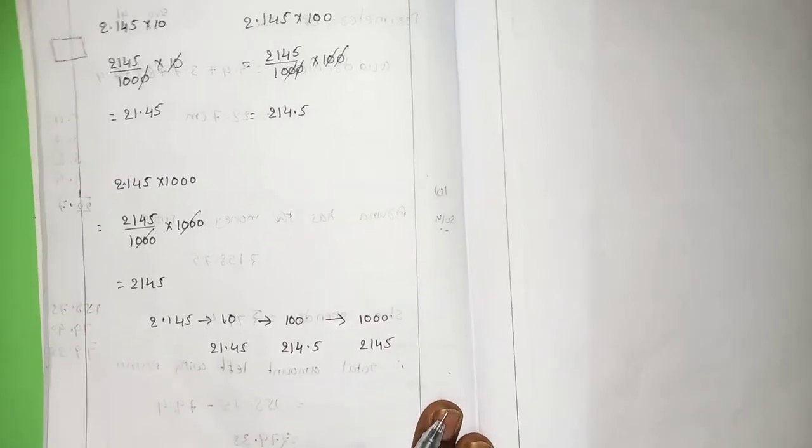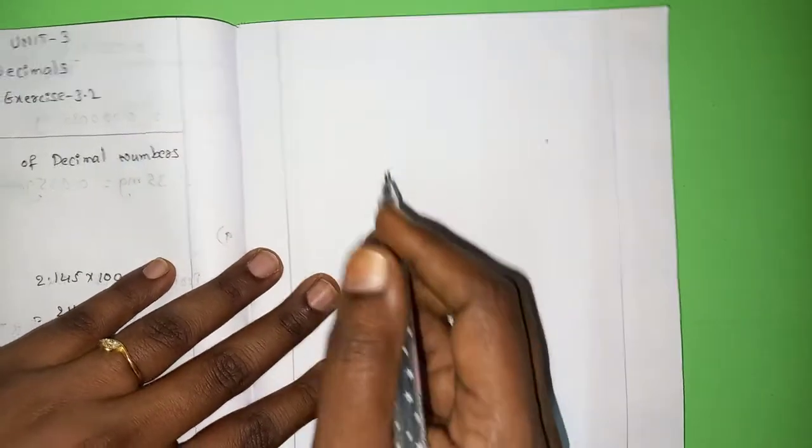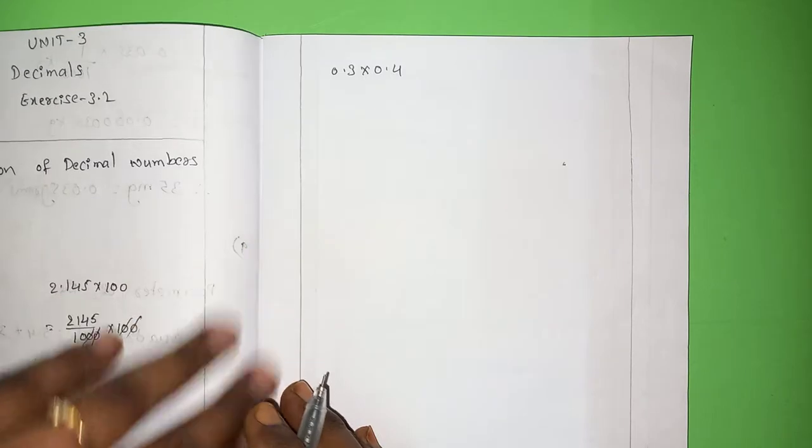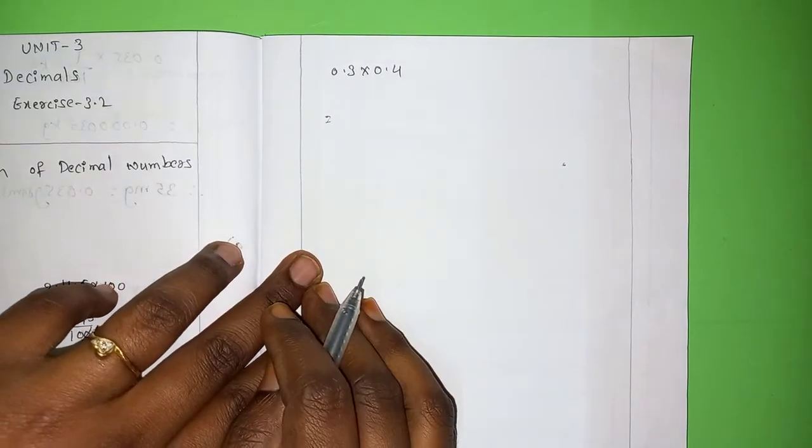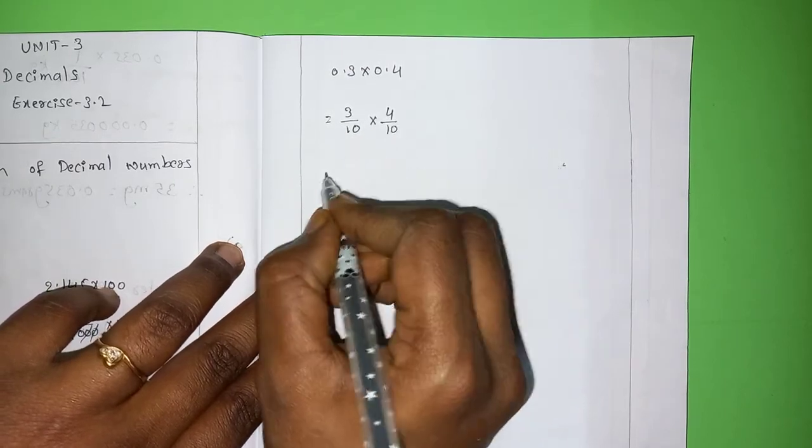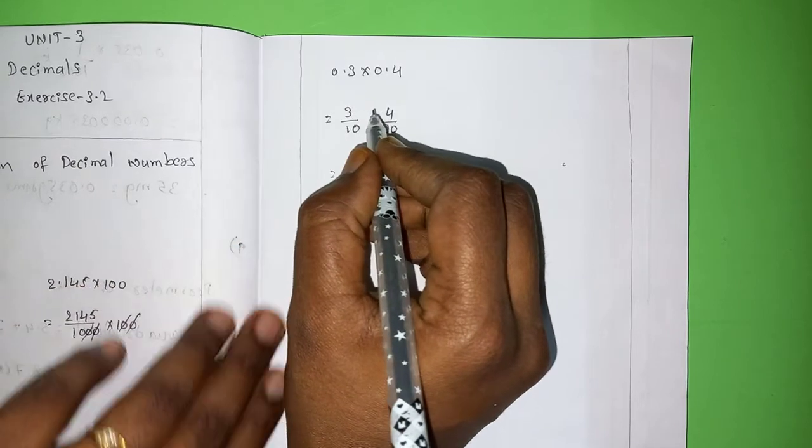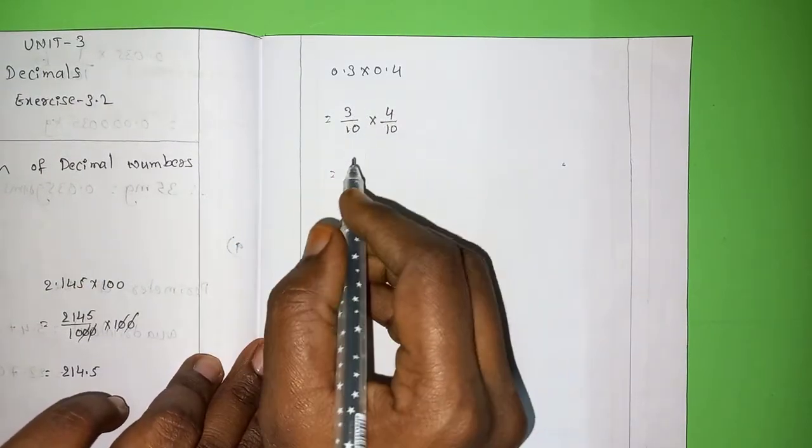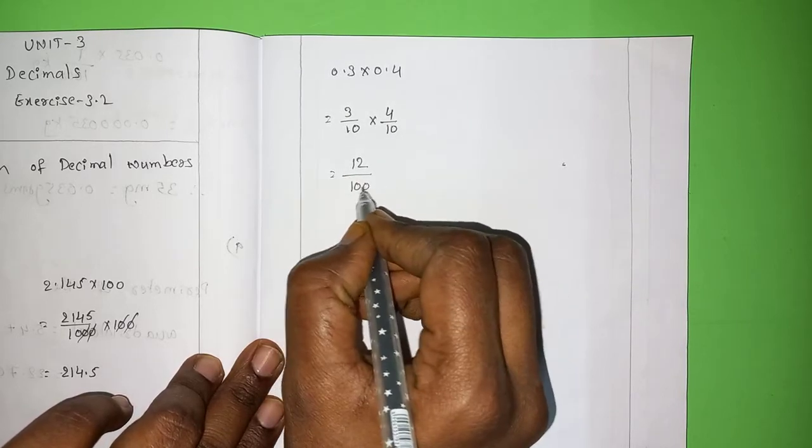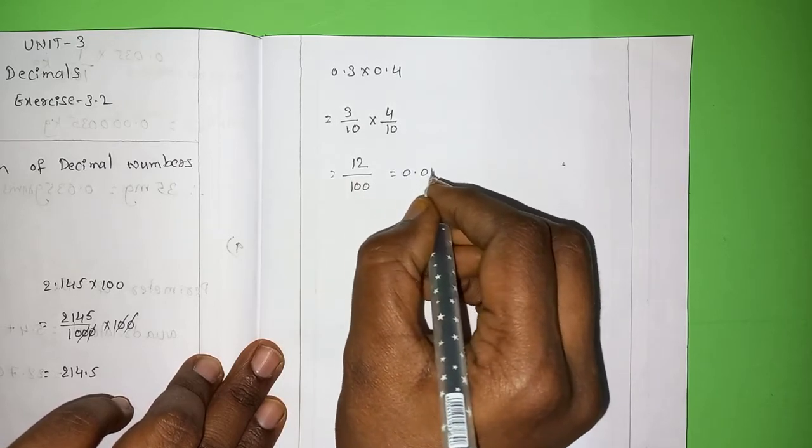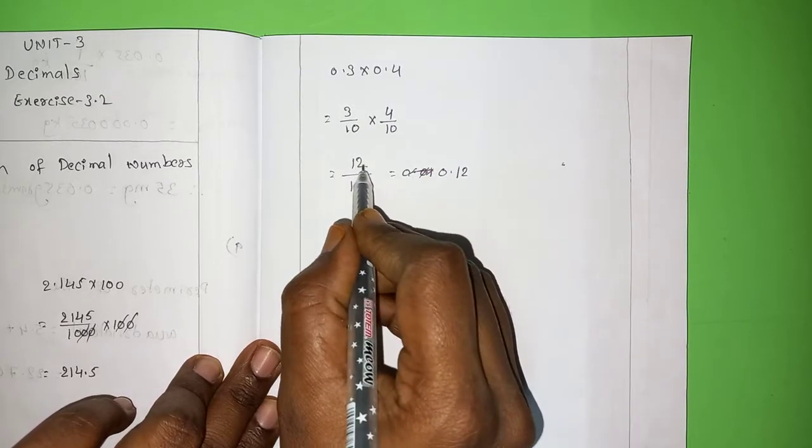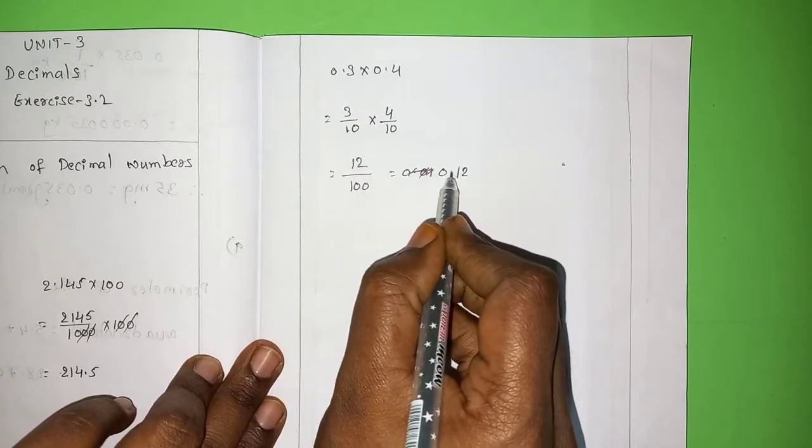So you understand how to multiply a decimal number with 10, 100, 1000, something like that. But, when it comes to normal numbers, for example, I have 0.3 into 0.4. How to multiply these? Make it as 3 by 10 into 4 by 10. Numerators you can multiply. In the same way, denominators you can multiply. 3 fours are 12. 12 divided by 10 into 10, 100. So, 2 zeros. So, it will become 0.12.